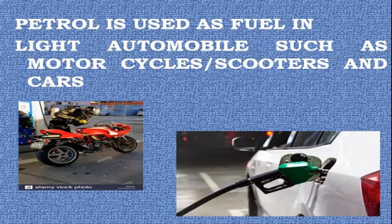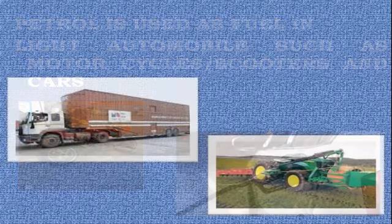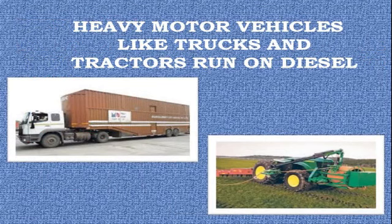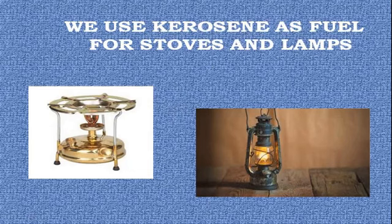Petroleum contains many components which are very useful to us. Let's discuss in detail about Petroleum. Petroleum is used as fuel in light automobiles such as motorcycles, scooters and cars. Heavy motor vehicles like trucks and tractors run on diesel. We use kerosene as fuel for stoves and lamps.